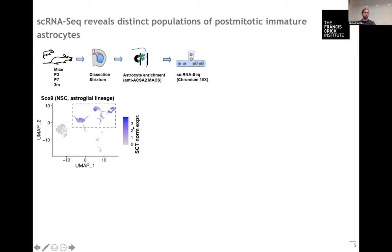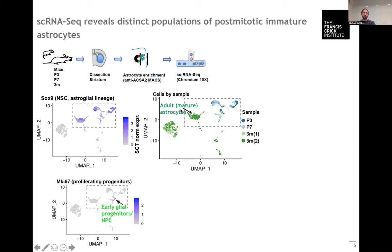We were focusing on SOX9 positive cells, which is a marker for the astroglial lineage. We identified different populations among those, including one population which is still proliferating, so probably the earliest glial progenitors.